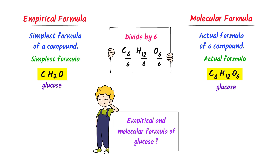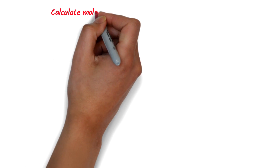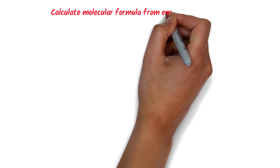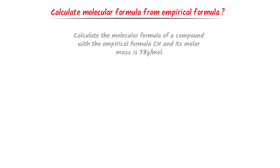So the molecular formula of glucose is C6H12O6 and its empirical formula is CH2O. Remember that empirical formula is the simplest formula of a compound and molecular formula is the actual formula of a compound. Now how can we calculate molecular formula from empirical formula?